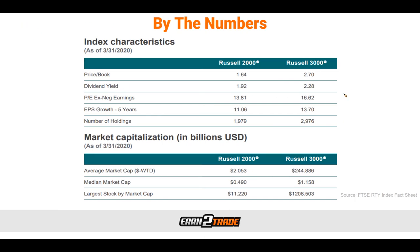By the numbers, let's take a look at the index characteristics of the Russell 2000 compared to the Russell 3000. The Russell 2000 has a price-to-book of 1.64 compared to 2.70 for the Russell 3000. The dividend yield is 1.92 compared to 2.28. Earnings: 3.81 versus 16.62. Growth over 5 years: 11.06 versus 13.7. Number of holdings: 1,979 compared to 2,976.